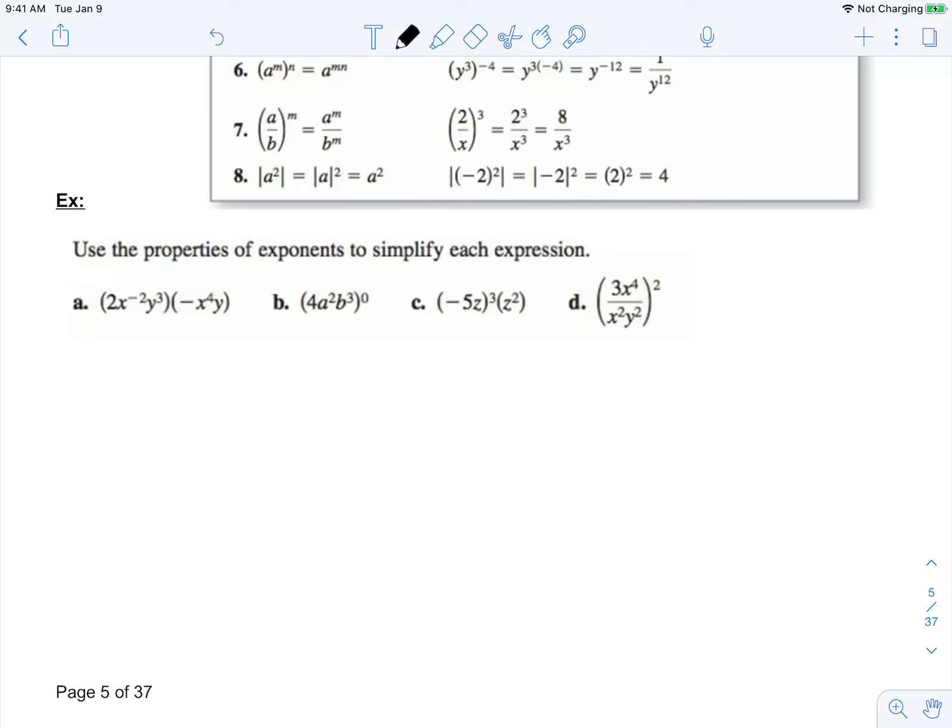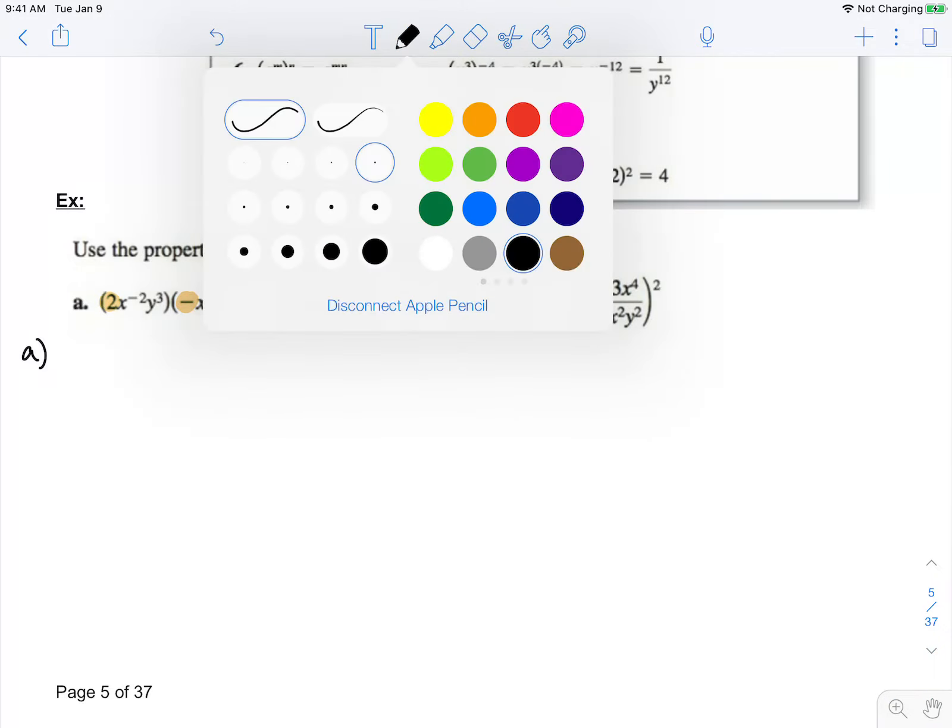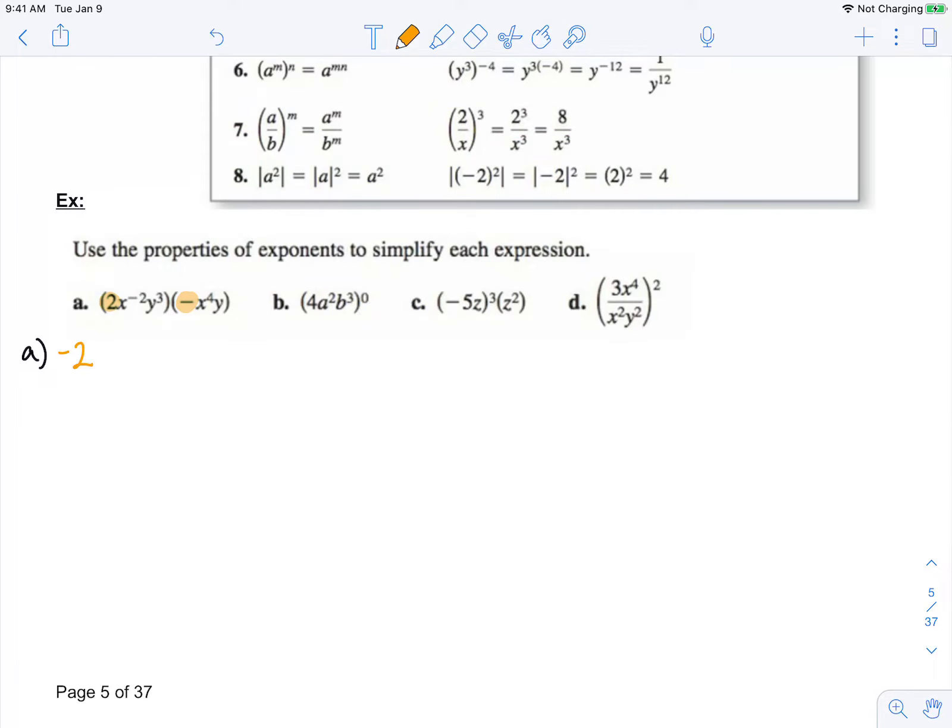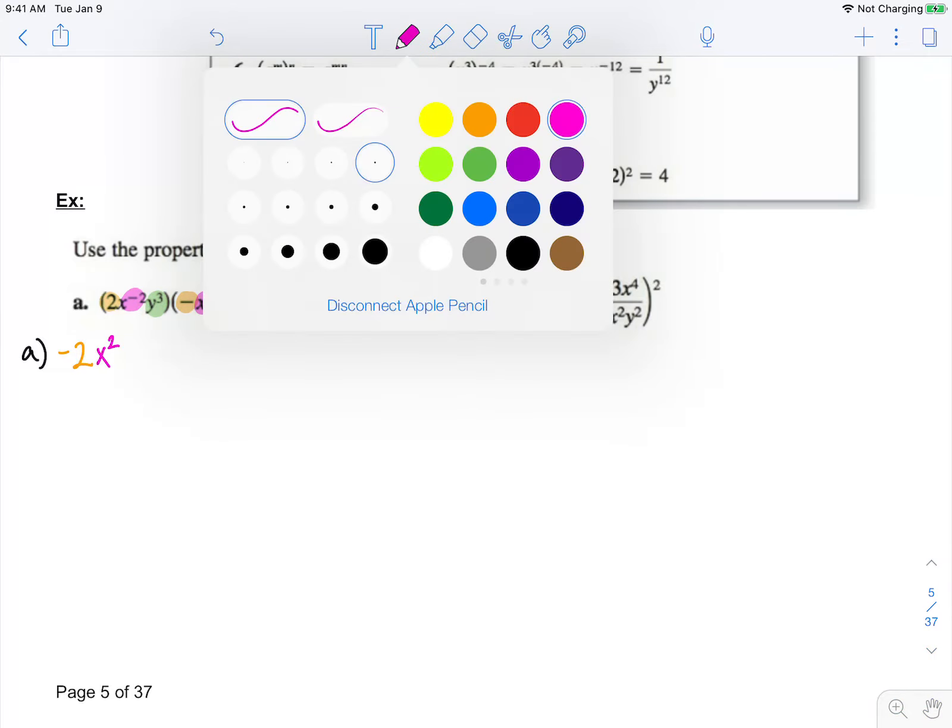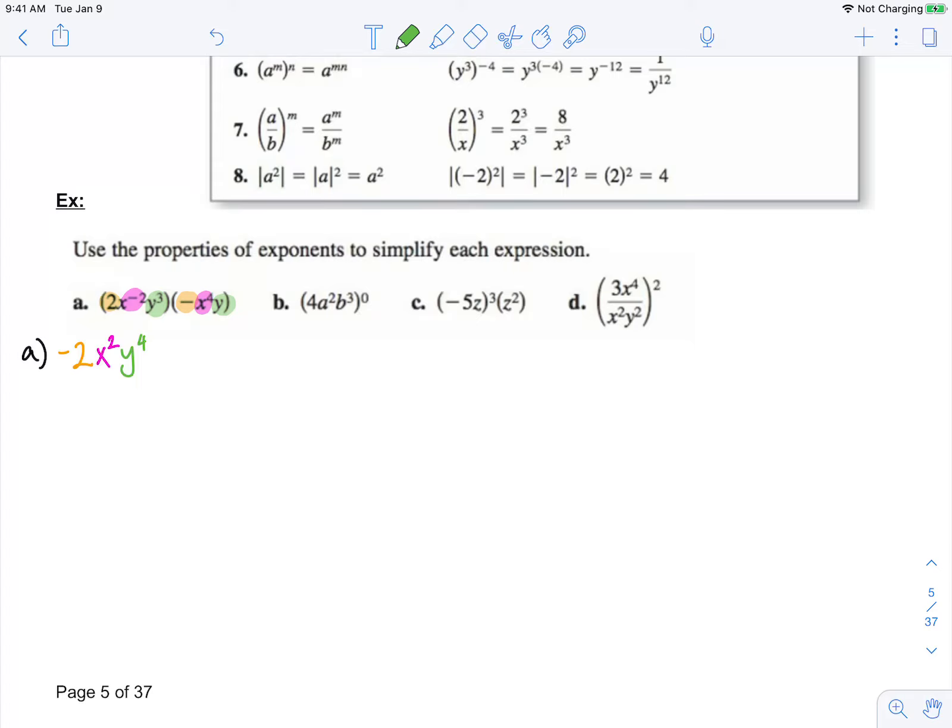So in Part A, the first thing I'm going to focus on is my coefficients. 2 times a negative is negative 2. Then I'm going to focus on my x's. x to the negative 2 times x to the 4th, I add my exponents, that makes x squared. And last, I'll focus on my y's. y to the 3rd times y, adding my exponents makes y to the 4th.